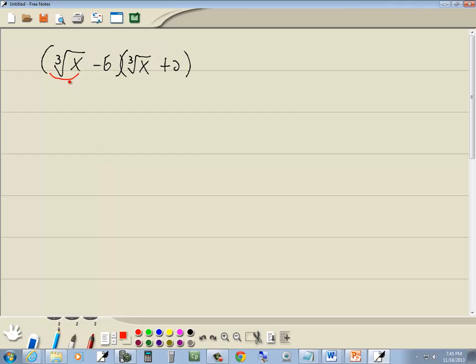So we're going to take this cube root of x, multiply it times this cube root of x and times this 2. And we're going to take this negative 6 and multiply it times this cube root of x and times this 2.